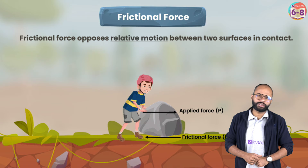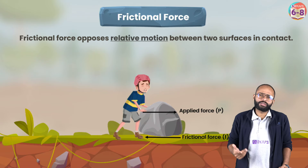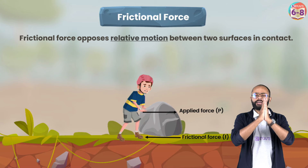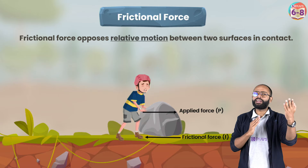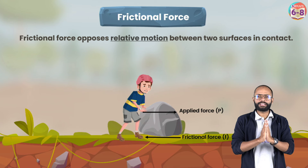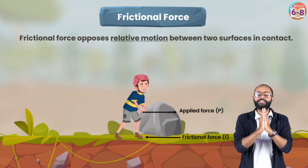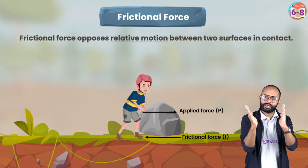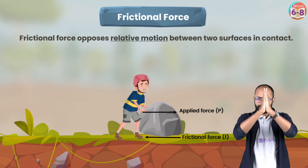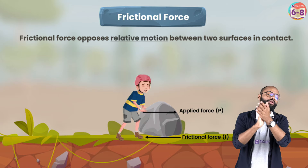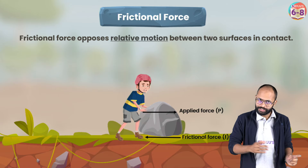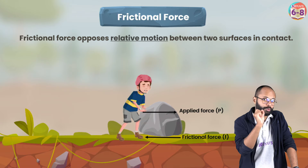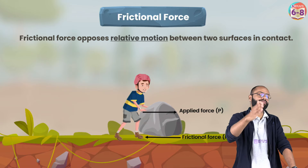Why do we say 'relative motion' and not just 'motion'? If both of my hands are moving together, each hand is in motion — but with respect to each other, they are at rest. So we say relative motion because surfaces must have motion with respect to each other for friction to act. Frictional force opposes relative motion, and that only happens when surfaces are in contact.